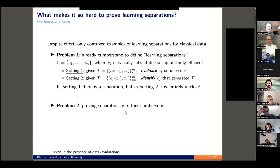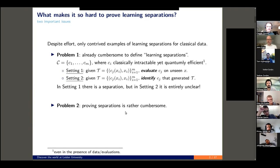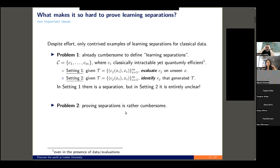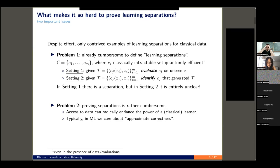The second problem is that proving separations is actually rather cumbersome. From a complexity theory perspective, there are two issues. One issue, if we want to verbatim translate complexity theory results, is that access to data can radically enhance the power of a classical learner — which in machine learning is the case, but typically in complexity theory we're not given access to data. Moreover, in more standard areas of complexity theory we study worst case complexity, whereas in machine learning all we care about is being approximately correct — correct on a fraction of possible inputs.